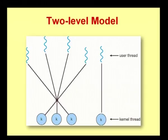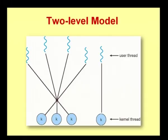This is how a two-level model looks. Here you have multithreading with a kernel. This diagram is similar to the many-to-many model, but the only difference is that in the two-level model, the thread gets bounded with the thread available in the kernel, whereas in the many-to-many model, it is only a mapping. That is about the two-level model.